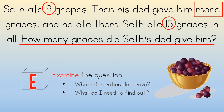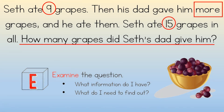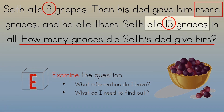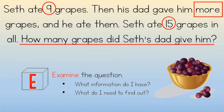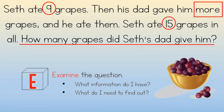E stands for examine the question. What information do you have? You know that Seth ate nine grapes, you know that his dad gave him more, and you know he ate 15 grapes in all. What do you need to find out? You need to find out how many grapes Seth's dad gave him — how many more. Continue on through the lesson to find the next video where you will solve it.